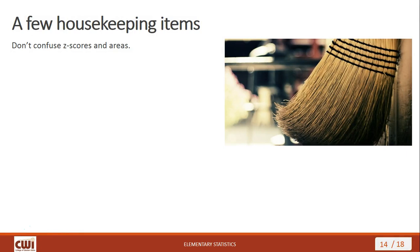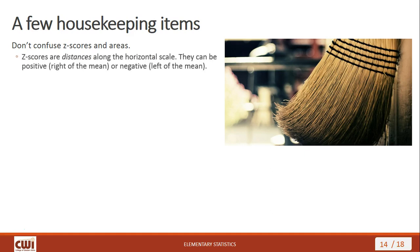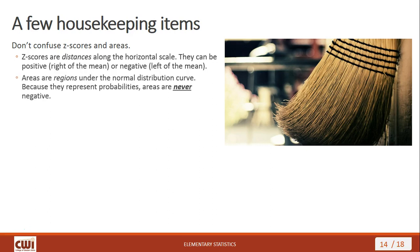A few housekeeping items: we want to avoid confusing z-scores and areas. Z-scores are distances along the horizontal scale — they can be positive, placing them to the right of the mean, or negative, placing them to the left. Areas are regions under the normal distribution curve; they represent probabilities and therefore are never negative. Please keep z-scores and areas straight.